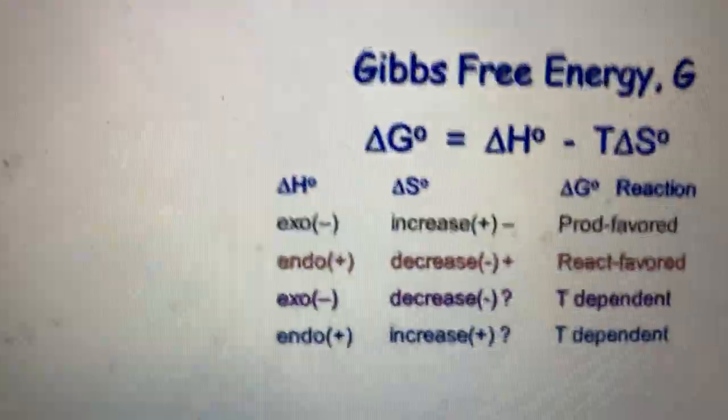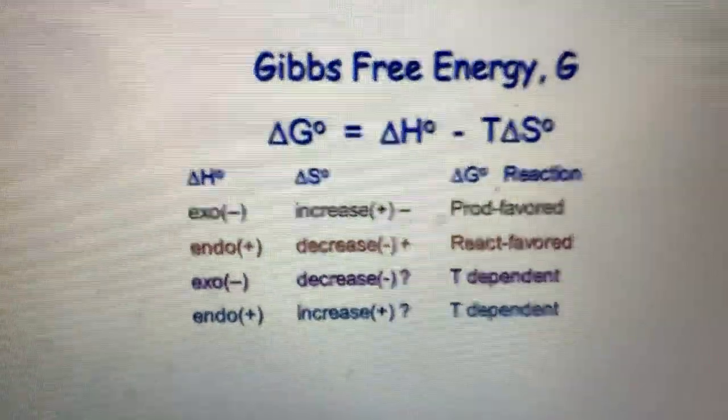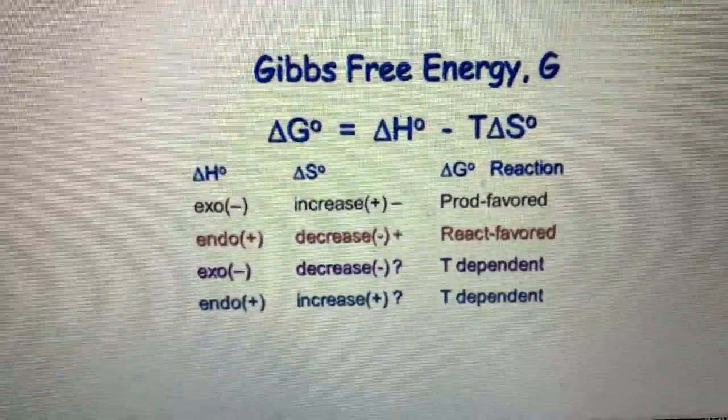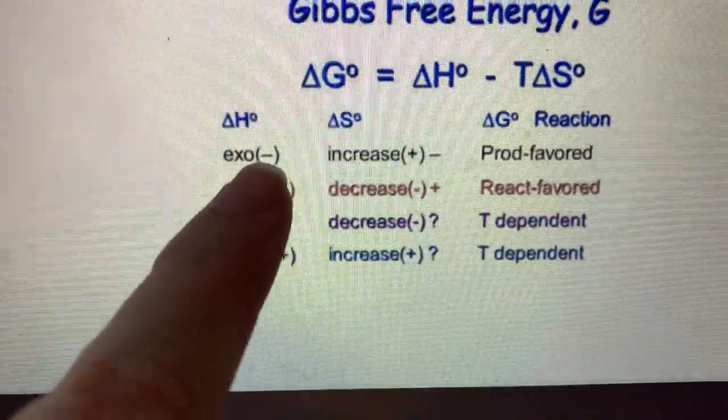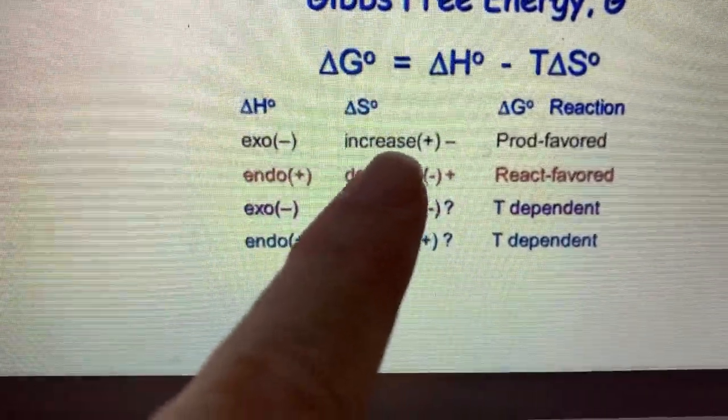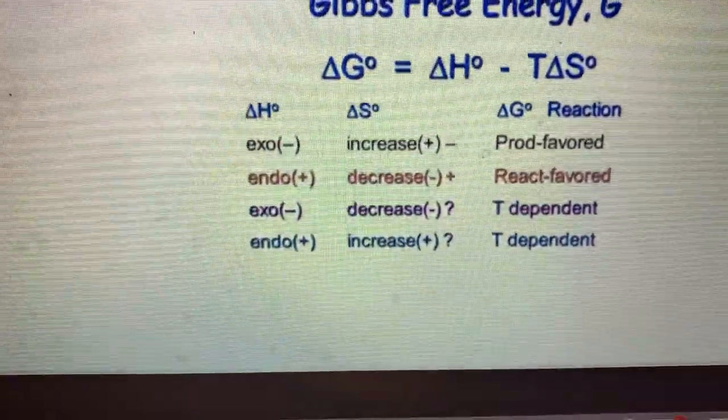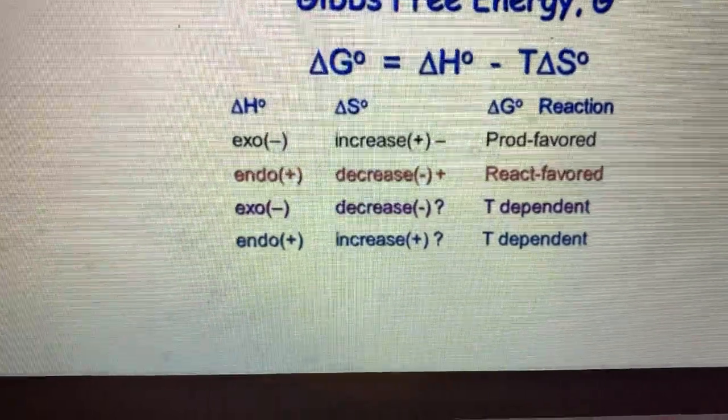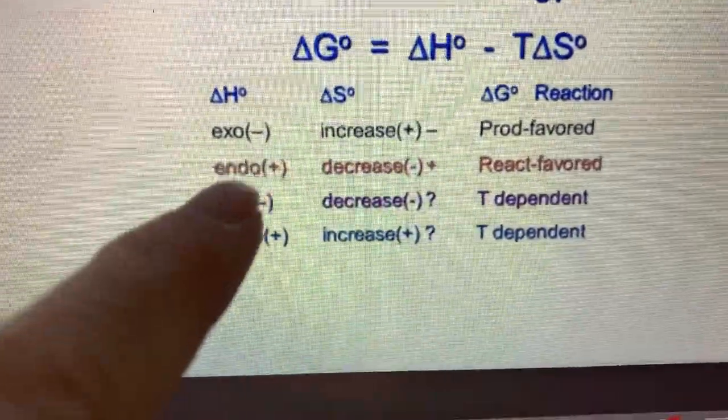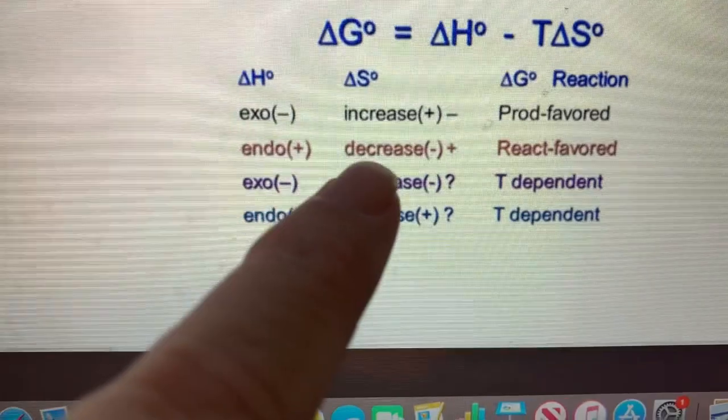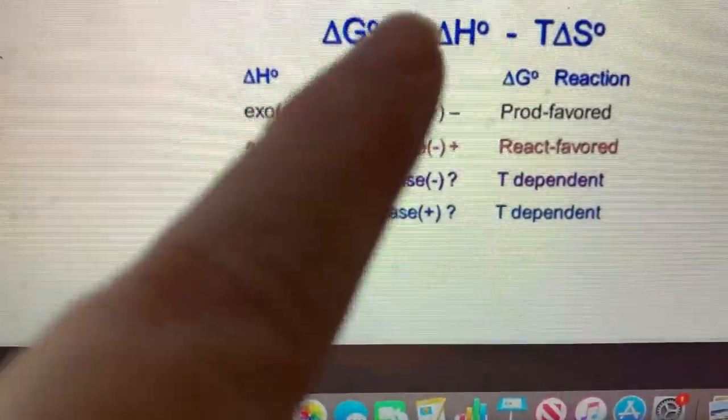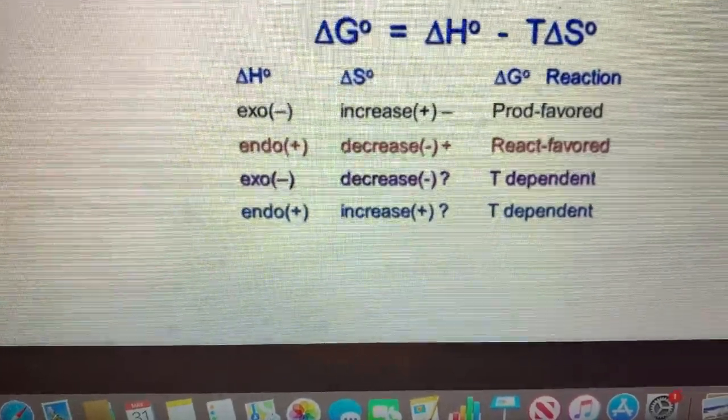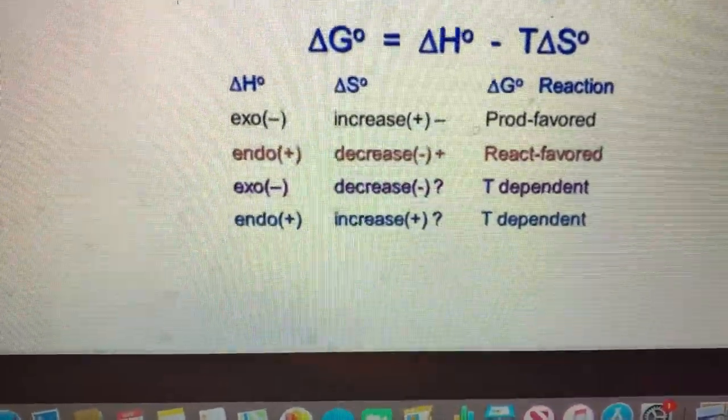This little table here is really nice because it just gives you a quick overview as to what we're dealing with. If you have, as we just said, negative delta H, positive delta S, product favored. You can figure it out, you don't even need to do a calculation. If you have an endothermic and a decrease in entropy, so opposing signs, it is reactant favored and will not be spontaneous. There's no reason for you to do any work.